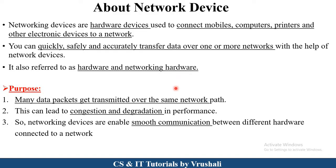There are multiple networks, so all these networks send lots of information and lots of data packets between each other. A data packet contains the source address, destination address, and whatever information they want to send — all stored in one packet, called a data packet. This data packet gets transmitted over different networks, which can cause congestion and degradation issues. Network devices solve this kind of congestion issue. They perform smooth communication between devices and between different networks, and try to send accurate information to the accurate destination.